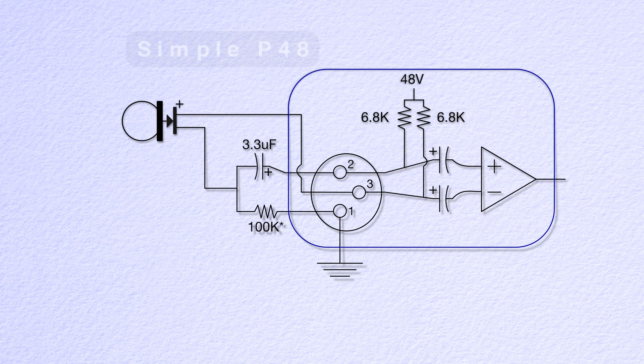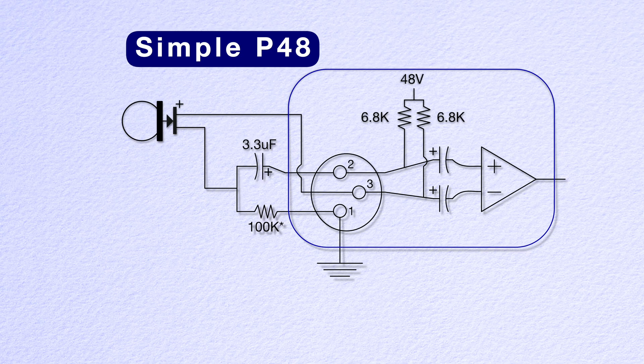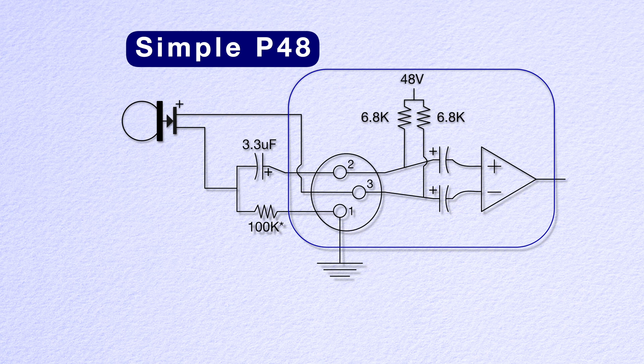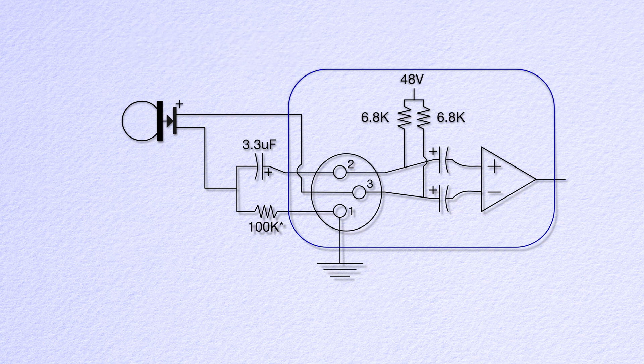Each microphone is getting 12 feet of Mogami W2697 microphone cable. This makes the whole build relatively easy to do. The first thing we need to do is wire the Simple P48 components to each XLR connector. That consists of one resistor and one capacitor. Quick review here of the Simple P48.